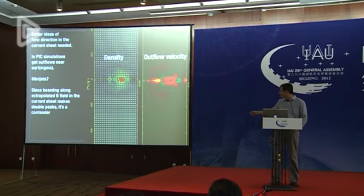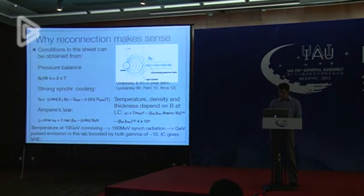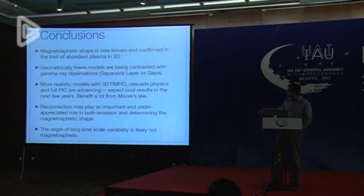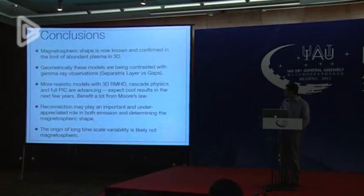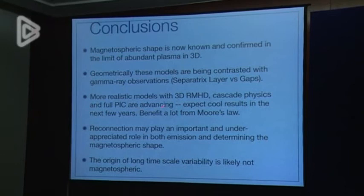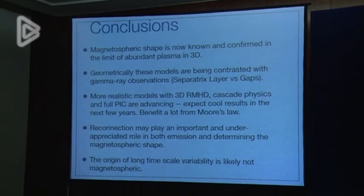To summarize: we now have the magnetospheric shape in full three dimensions in the limit of abundant plasma. To explain the gamma rays, these models predict emission coming from current sheets — what we call the separatrix layer. I encourage you not to just think of emission coming from outer gaps; there is also another player, the current sheet beyond the light cylinder. We're right on the verge of more realistic models with 3D relativistic MHD and full particle-in-cell simulations, and in the next few years there will be interesting advances adding more physics to pulsar magnetospheres.